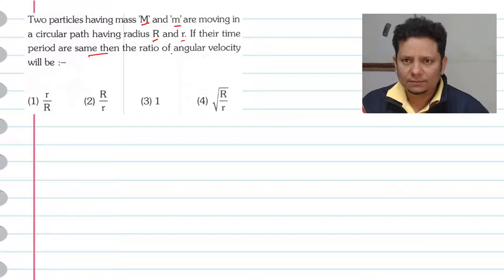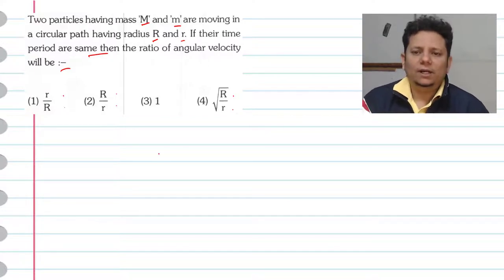If their time periods are same, then the ratio of angular velocity will be: option 1, r by R; option 2, R by r; option 3, 1 is to 1; or option 4, square root of R by r.